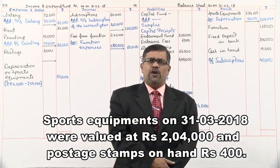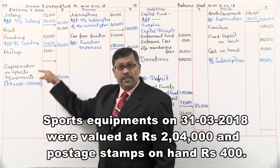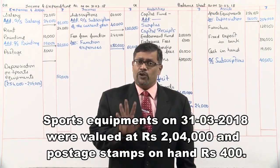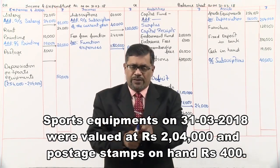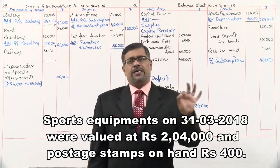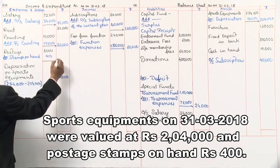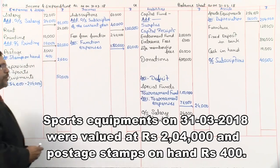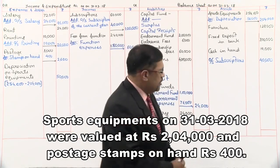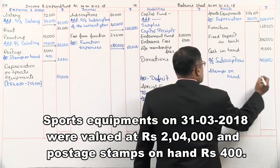Last adjustment — postage stamps on hand: rupees 400. How much stamps were purchased? 3,000 — we showed that as expenditure. But out of those 3,000, stamps worth 400 are still remaining. Remaining stamps are stock, which is an asset. So we cannot show the full 3,000 as expenditure — stamps used are only 2,600, which becomes our expenditure. In the account, postage stamps on hand 400 are minused, so stamps used are 2,600. Second entry in the balance sheet — stamps on hand is an asset — stock of stamps: 400.